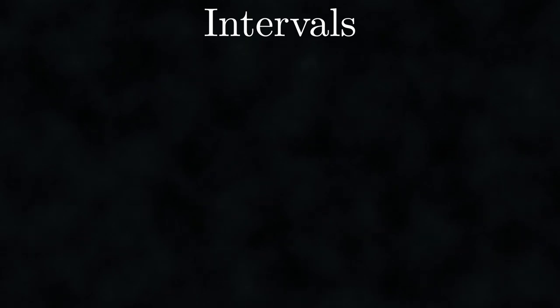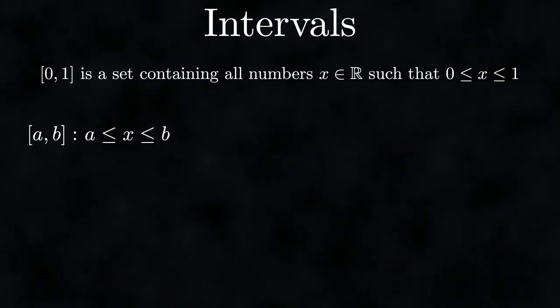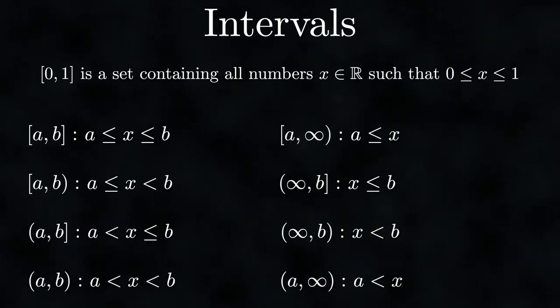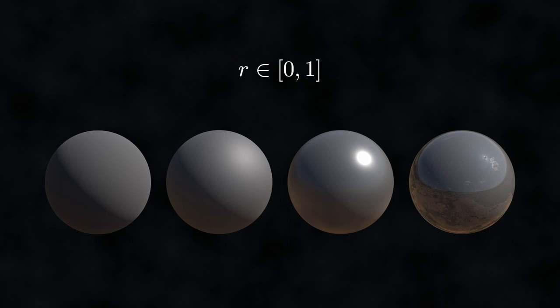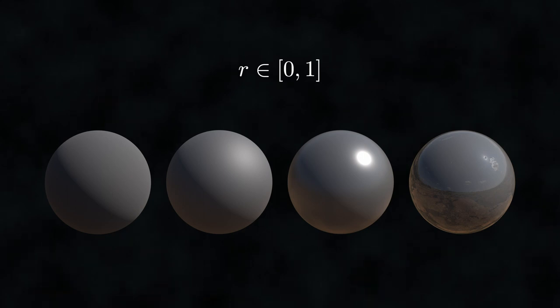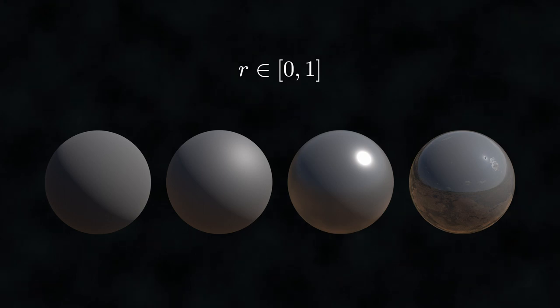One tool that helps us describe sets are intervals. Intervals represent sets of real numbers bounded by two values. The most common one for us will be the closed interval, particularly the closed interval between 0 and 1, which contains all values between 0 and 1 as well as the boundary values. Using the closed interval, we can precisely define the set of all possible roughness values in a principled shader — roughness ranges from 0 to 1. Writing that 'r lies in the closed interval from 0 to 1' elegantly captures information that would otherwise require an entire English sentence.